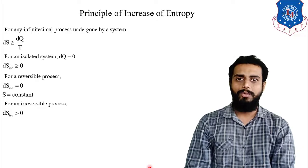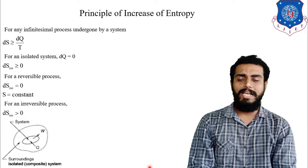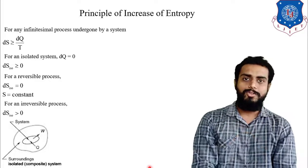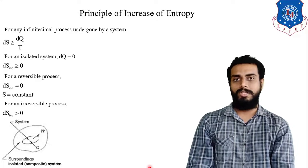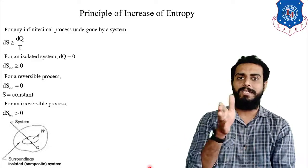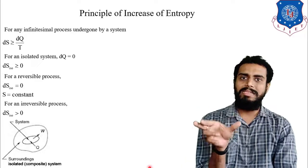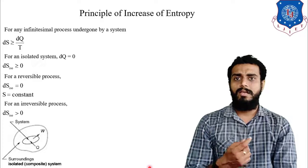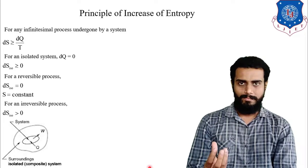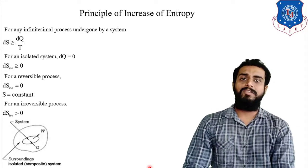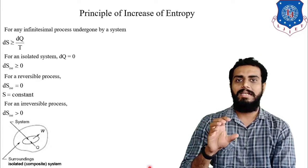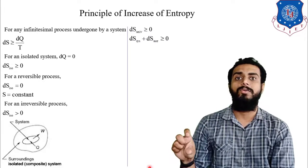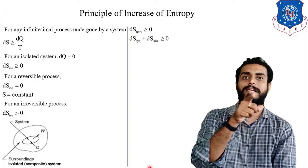Here I have shown a simple diagram with a system and its surrounding. System and surrounding together constitute the universe. For this universe, the entropy change will be greater than or equal to zero. The entropy change of the universe can be segmented into two parts: entropy change for the system and entropy change for the surrounding. The addition of both these entropy changes will be greater than or equal to zero. It is possible that for the system the entropy change is negative, but for the surrounding the entropy change will be positive and that positive value will be higher than the negative value, so the total entropy change of the universe will be greater than zero.